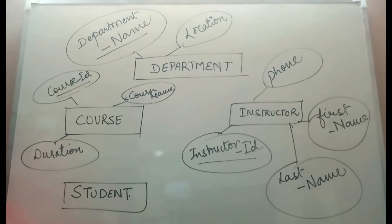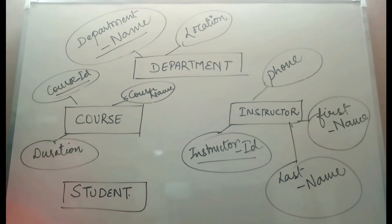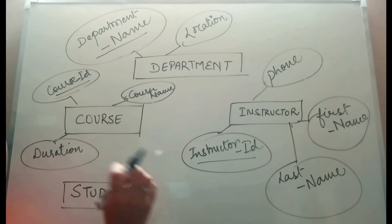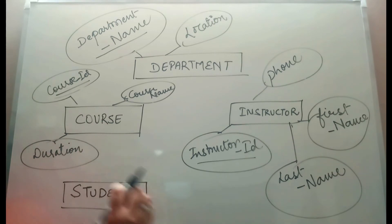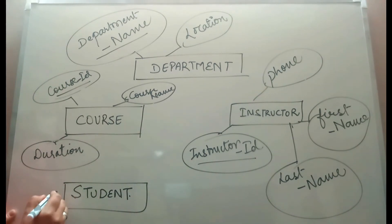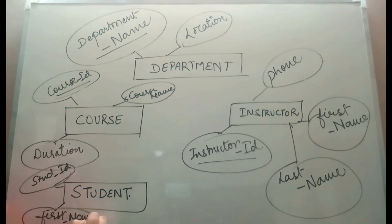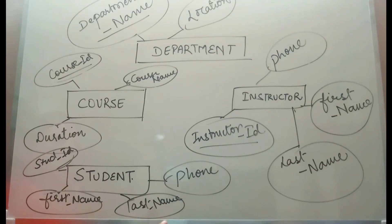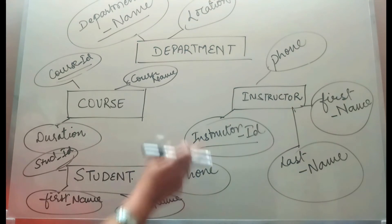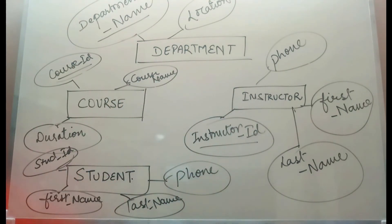Remember, we are drawing a simple entity relationship diagram. In the future we will talk about enhanced entity relationship diagrams, which are useful for BTEC students. For MIS students, this kind of diagram is more than enough. For the student entity, attributes are: student ID as primary key, first name, last name, and phone number. So we have all four entities — department, course, instructor, and student — with their attributes shown.